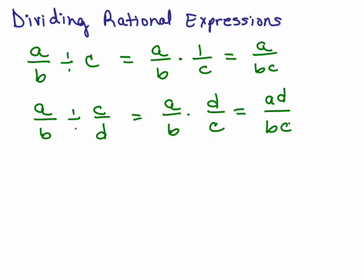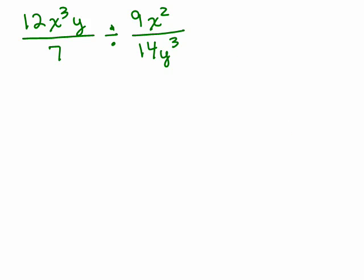which was the same technique as simplifying. You just factor everything, hopefully a lot of stuff cancels out, and you're done. Okay, let's start with this one, 12x³y/7 divided by 9x²/14y³.